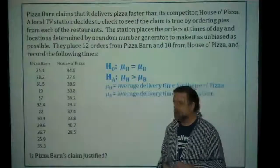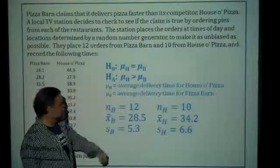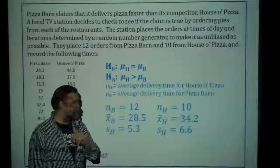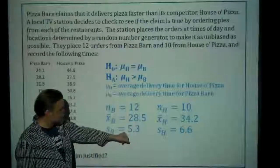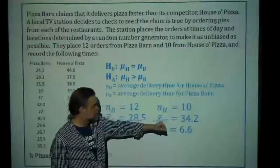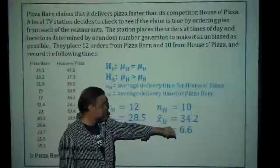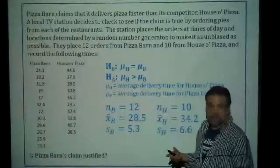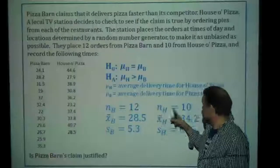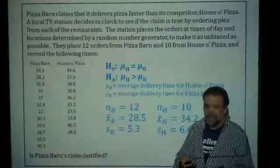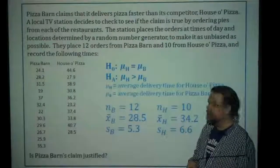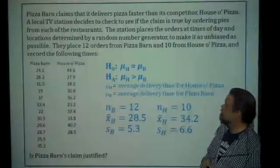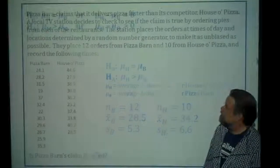Our sample size for Pizza Barn is 12, with a sample mean of 28.5 minutes and a standard deviation of 5.3. For House of Pizza, we have a sample size of 10, a sample mean of 34.2 minutes, and a standard deviation of 6.6. So for these particular samples, yes, the claim looks valid — but these are only samples of size 12 and 10. House of Pizza might say that's just due to natural variation, which is exactly why we do the hypothesis test.